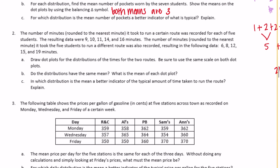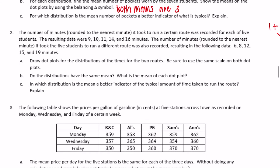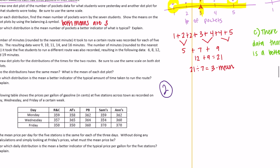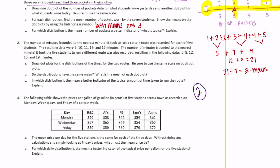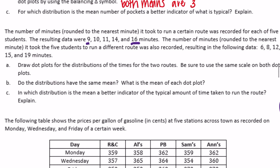On to number two. The number of minutes rounded to the nearest minute it took to run a certain route was recorded for five students: 9, 10, 11, 14, and 16 minutes. The times for a different route were also recorded: 6, 8, 12, 15, and 19 minutes. Draw dot plots for both distributions using the same scale. The smallest is 6, the largest is 19.